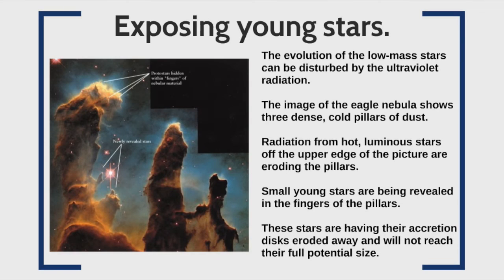Here we have a picture of the Eagle Nebula. You can see three large pillars that are dark nebulae, and off to the top right there are some young, very large stars. The solar wind from these stars is blowing away the tops of the pillars of the dark nebulae, exposing young stars in the process. These young stars are also getting their accretion disks blown away, so they'll never quite reach their full potential size.